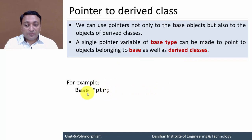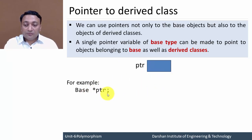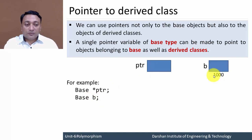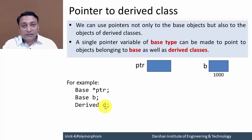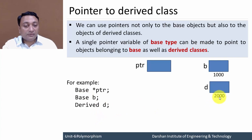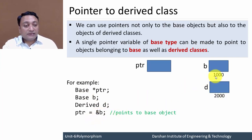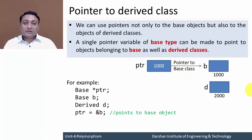Here is the example. I have created one pointer variable of base class — it will occupy some memory block. Next I'm creating an object of base class that will again occupy one memory block with some address. Now I am creating object D of derived class, which is derived from base class, so it will occupy one memory block with some address. Now if I write the address of B, that is 1000, it will be stored to the pointer so it will point to the object of base class.